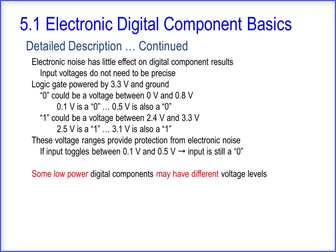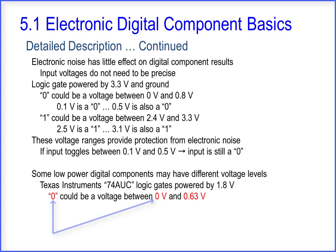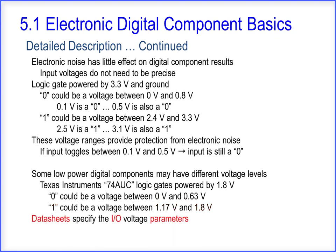Some low-powered digital components may have different voltage levels. For example, the Texas Instruments 74AUC logic gates powered by 1.8 volts: a 0 is a voltage between 0 volts and 0.63 volts, and a 1 is a voltage between 1.17 volts and 1.8 volts. Data sheets provide the IO voltage parameters.